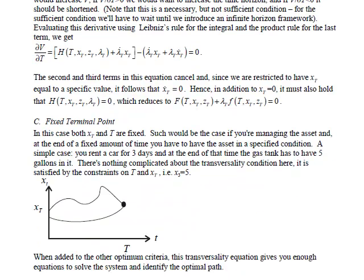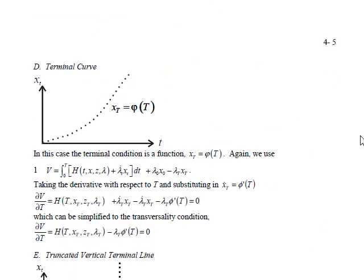We can even take the derivative with respect to T when X capital T has to take on a particular value for different values of T. The approach is very much the same. Go back to equation one, make sure you're looking at the problem in the appropriate formulation. If you've got salvage value, you need to incorporate that in. Then take the derivative and you get your transversality conditions.